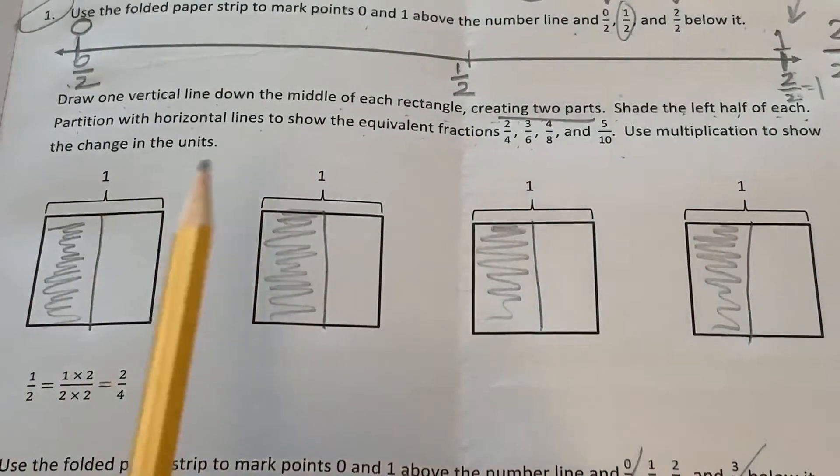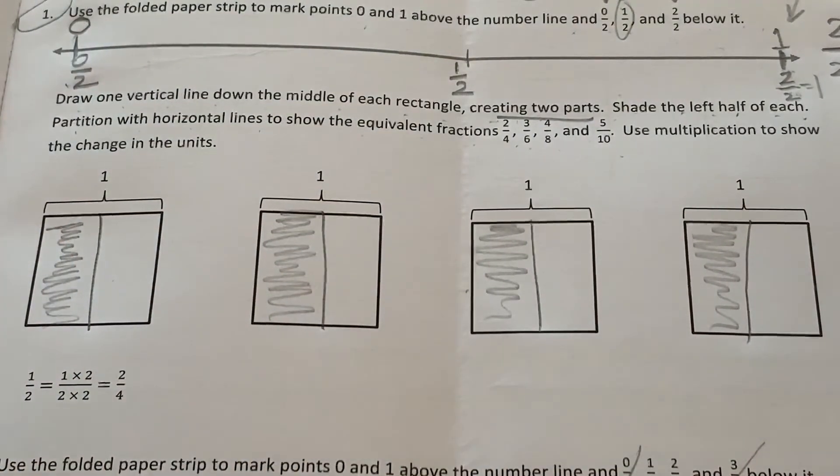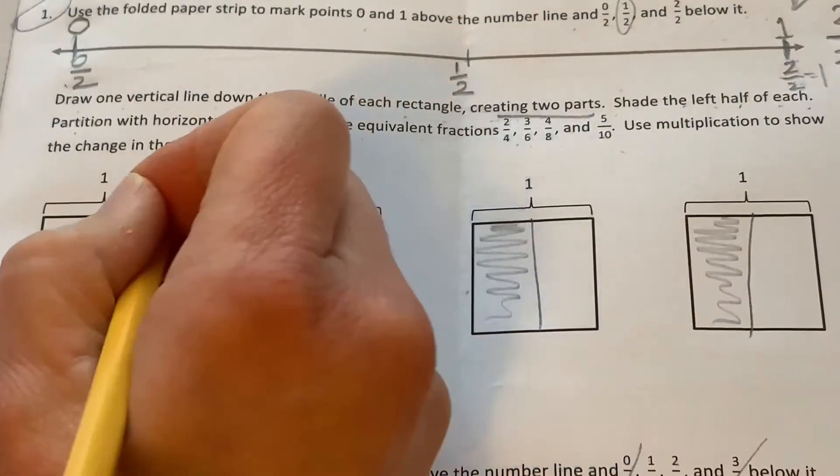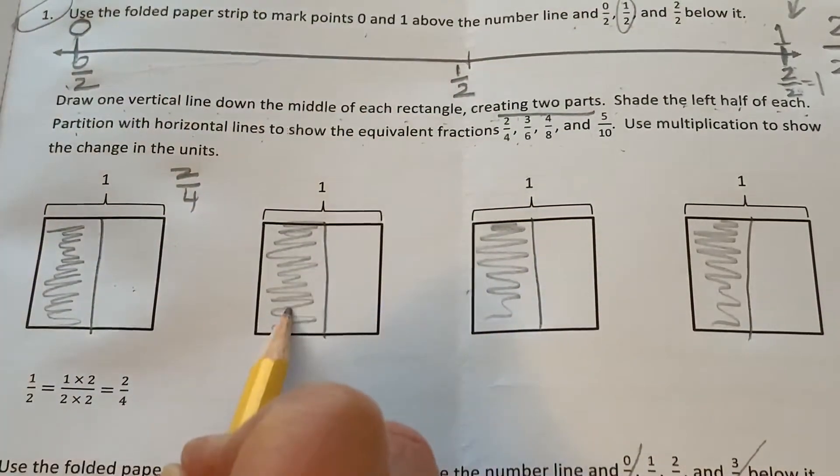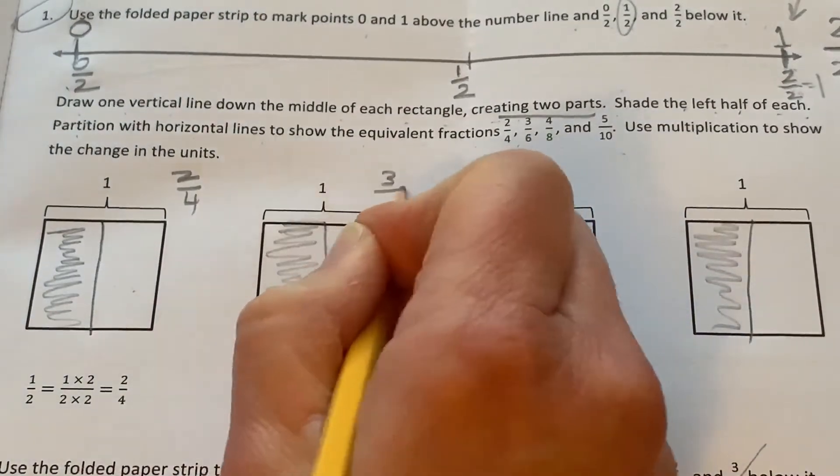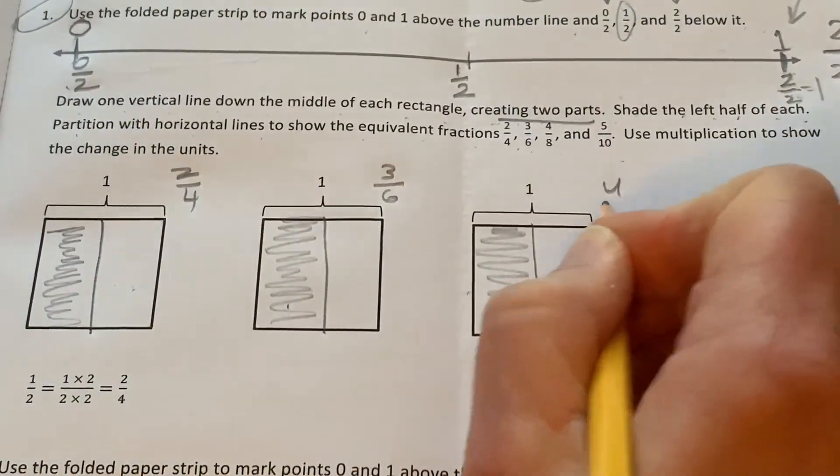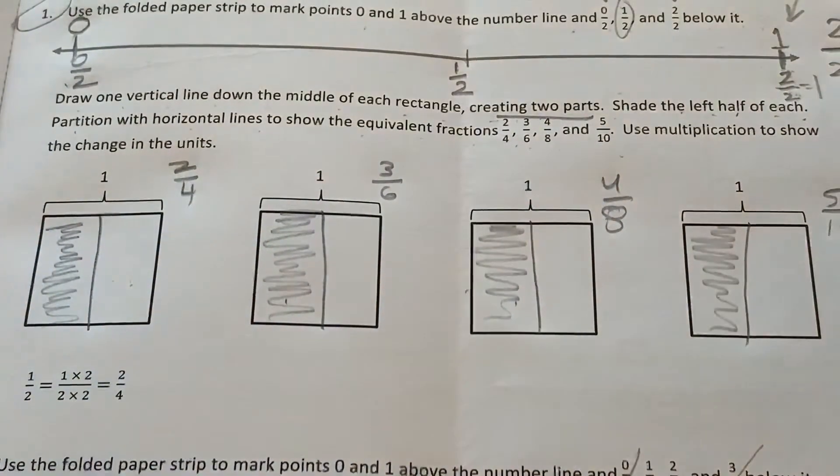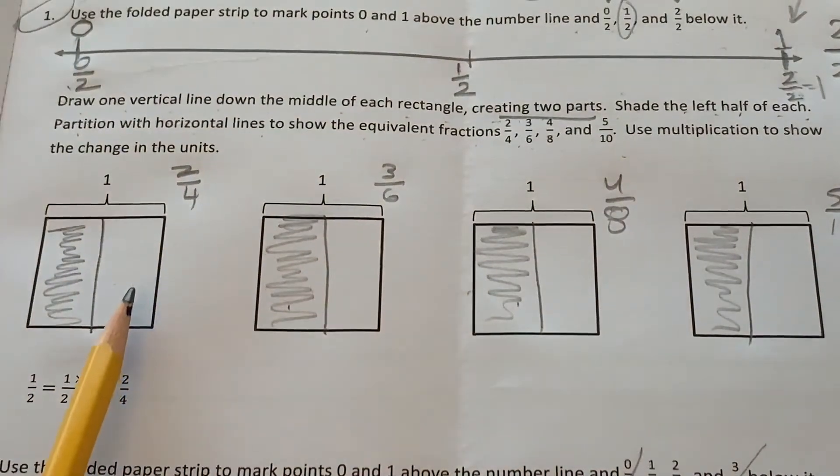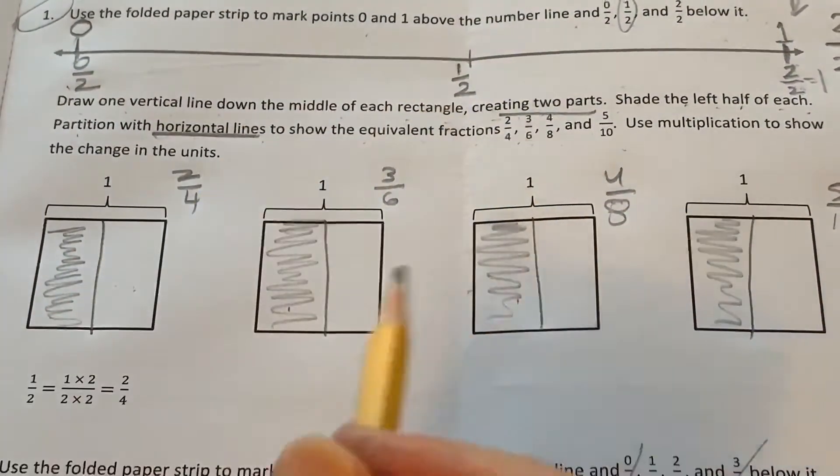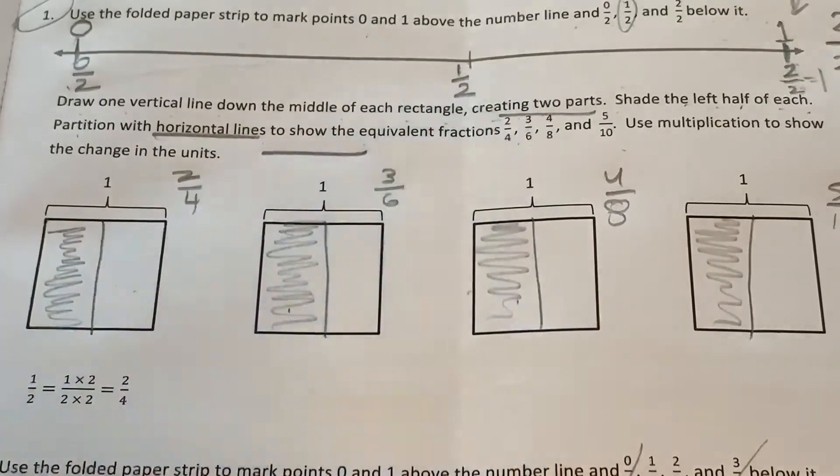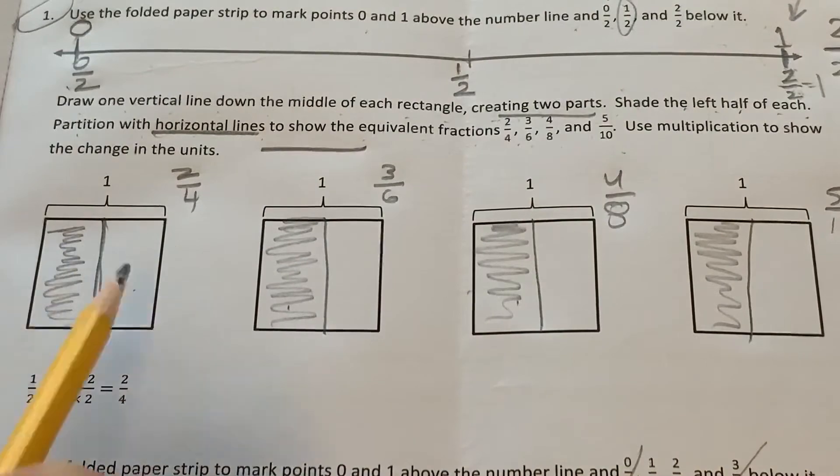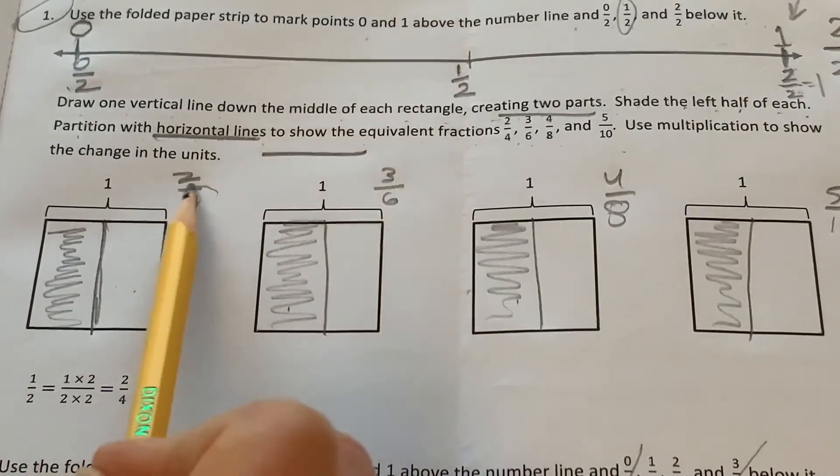Okay. So basically, with each one of these, we're going to do something different. They want this rectangle to show 2 fourths, and this rectangle to show 3 sixths, and this rectangle to show 4 eighths, and this rectangle to show 5 tenths. So let's try the first one together. You want to use horizontal lines. This is a horizontal line, like that. This was a vertical line. So we need to divide horizontally this square into four pieces.